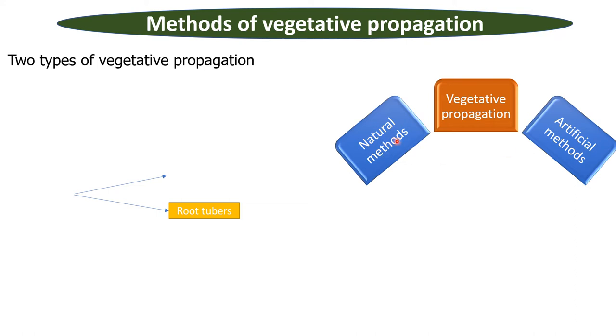Natural methods of vegetative propagation happen in nature naturally, but artificial methods of vegetative propagation are created by man artificially.